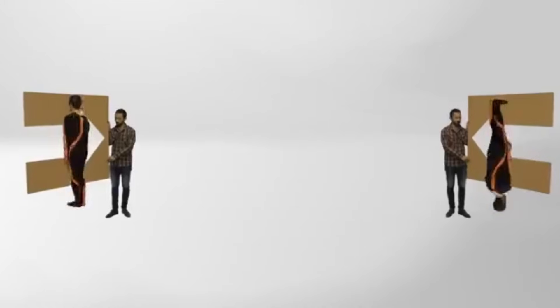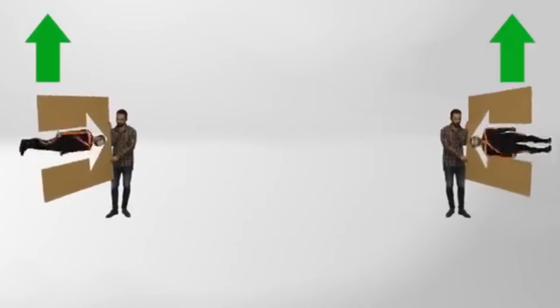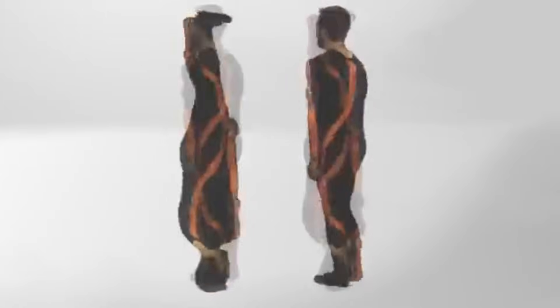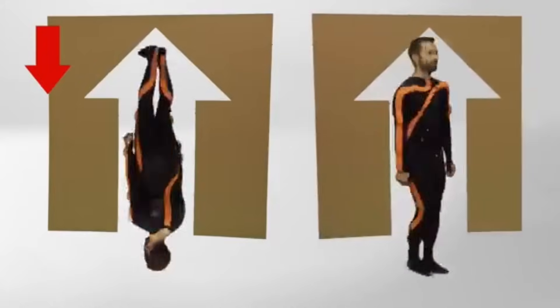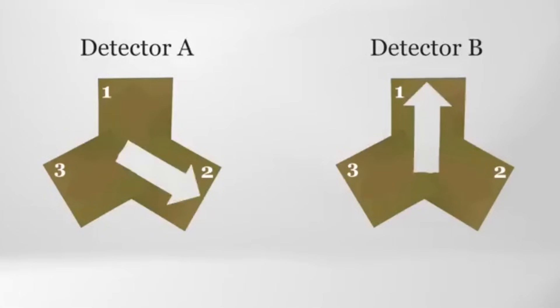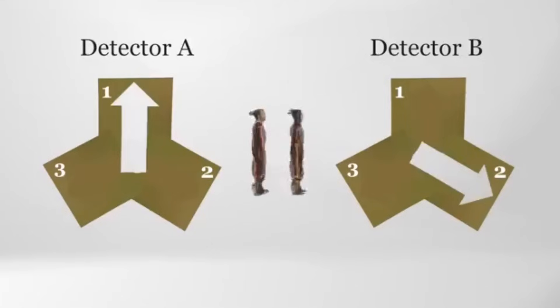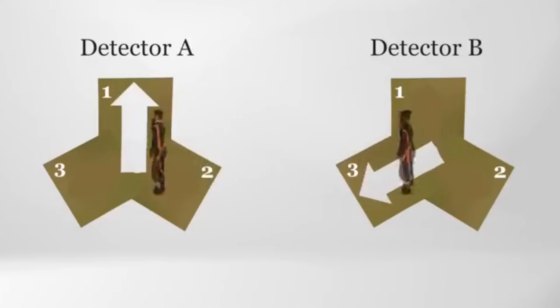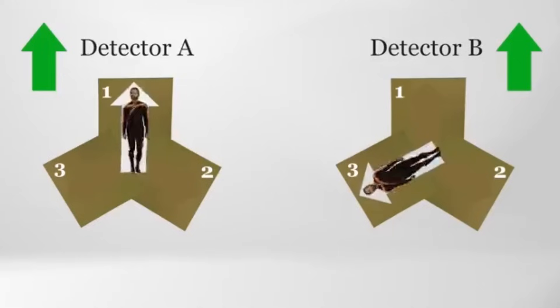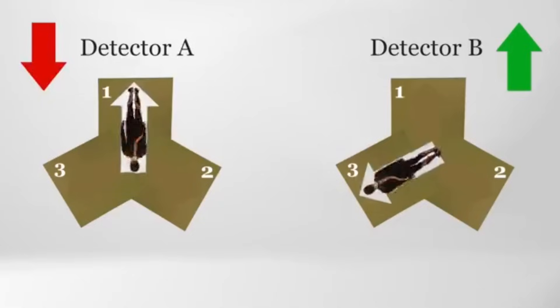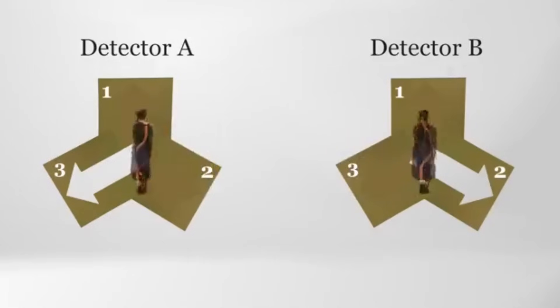Some might argue, well, maybe our simulators use some unknown physics beyond quantum mechanics. But this argument collapses when you look closer. Even if the base reality had different physics, the quantum results we observe would still be impossible to generate artificially. Here's why. To simulate quantum effects like entanglement without using quantum physics would require transmitting information faster than light, violating Einstein's theory of relativity. You'd need to break one fundamental law of physics just to simulate another. The combination of mathematical proof and experimental confirmation creates an insurmountable barrier for simulation theory. The quantum behaviors we observe cannot be created through classical computation. Period.